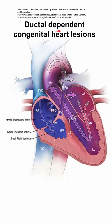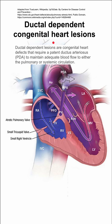Here are some notes on ductal-dependent congenital heart lesions. Ductal-dependent lesions are congenital heart lesions that have a patent ductus arteriosus, shown here, and they depend on that PDA to maintain adequate blood flow to either the pulmonary or systemic circulation.